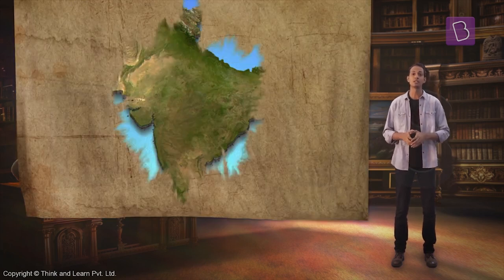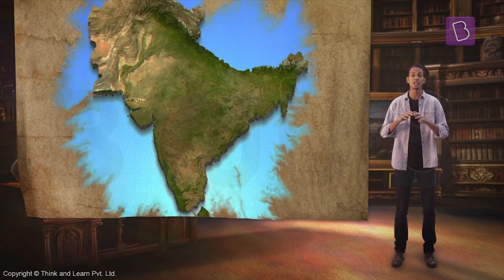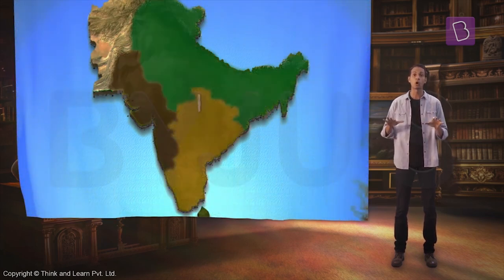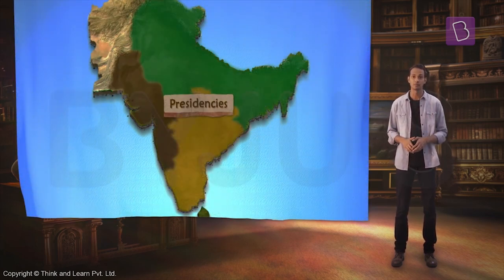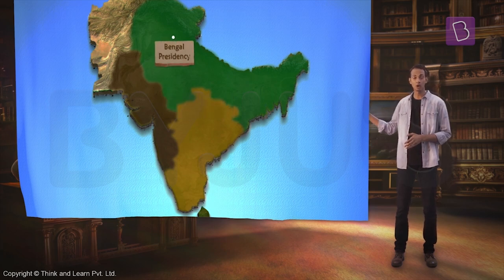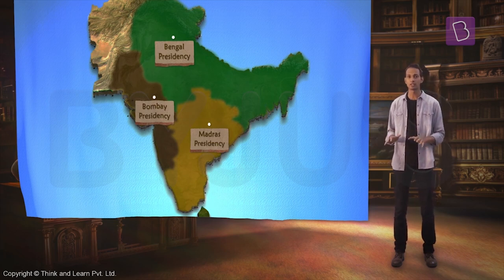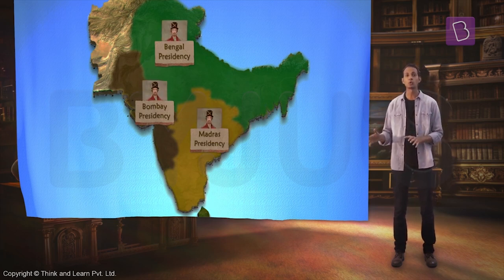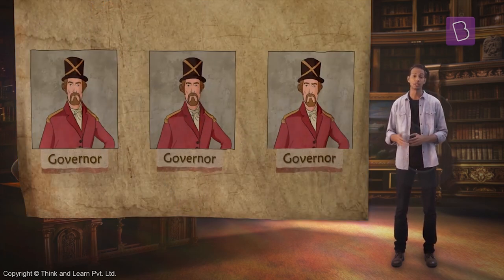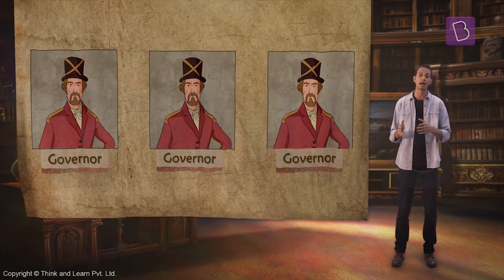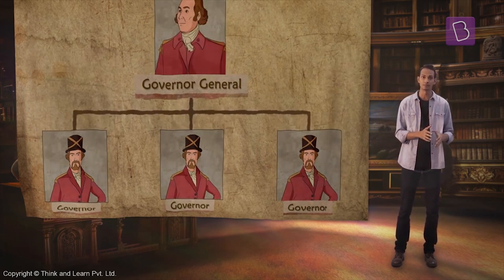Britain divided India into three territories called presidencies, which were named Bengal, Madras and Bombay. Each presidency was ruled by a governor. The governors were managed by a governor-general.